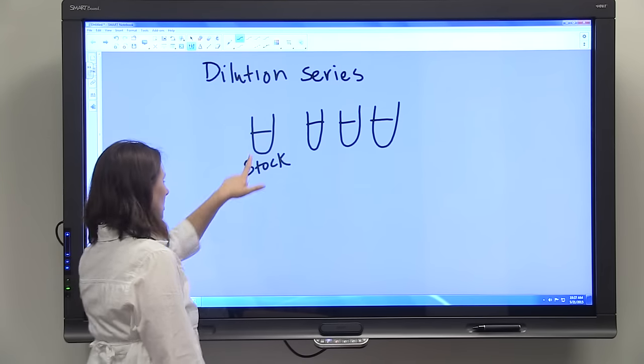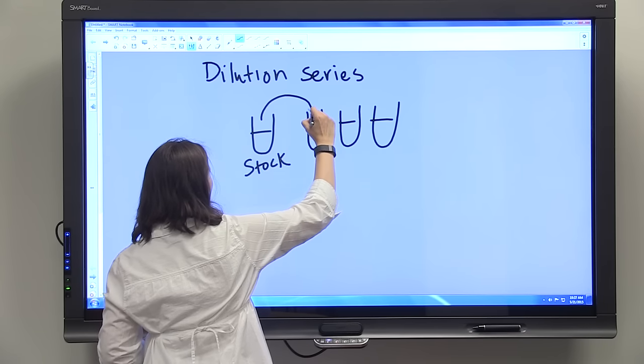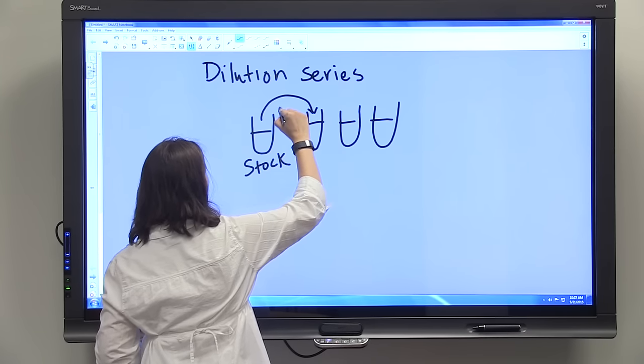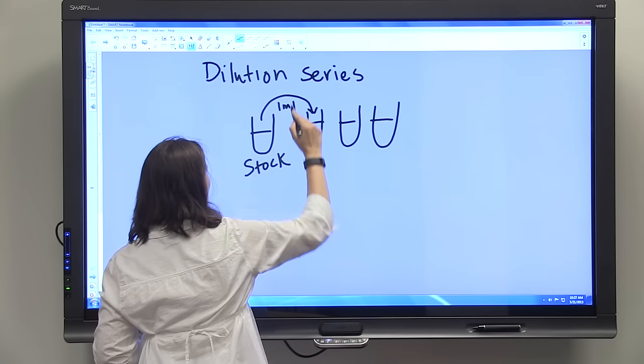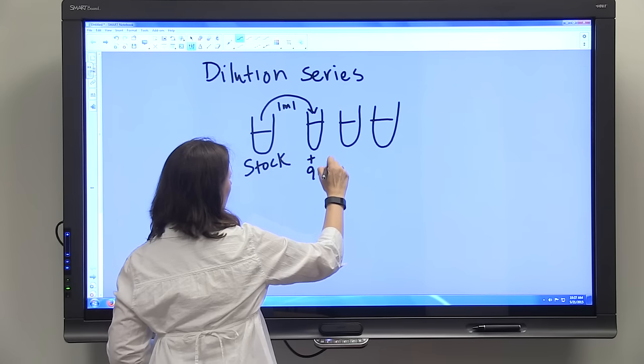So in a dilution series you're given stock and you're going to add one ml to this first test tube and nine ml's of your diluent.